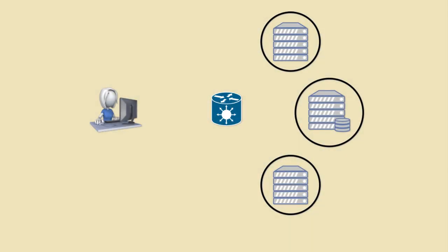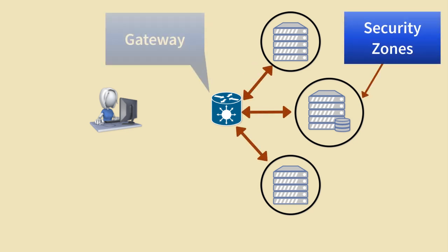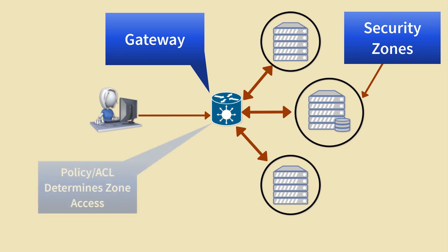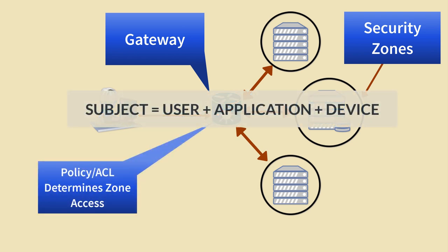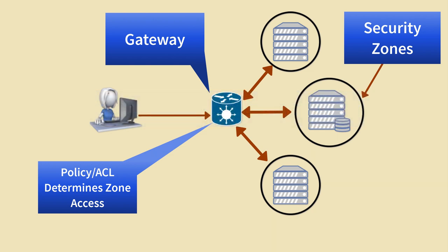Even if we don't call them zones, we have created them for years. We create a security zone whenever we create a VLAN segment and apply a VLAN access control list. We traditionally enable access to zones for any subject — a subject being a combination of a user, an application, and a device that has passed a single point of authentication. Access to devices within the zone also requires a single authentication and authorization step to gain and maintain access for the day. But this all changes with Zero Trust.